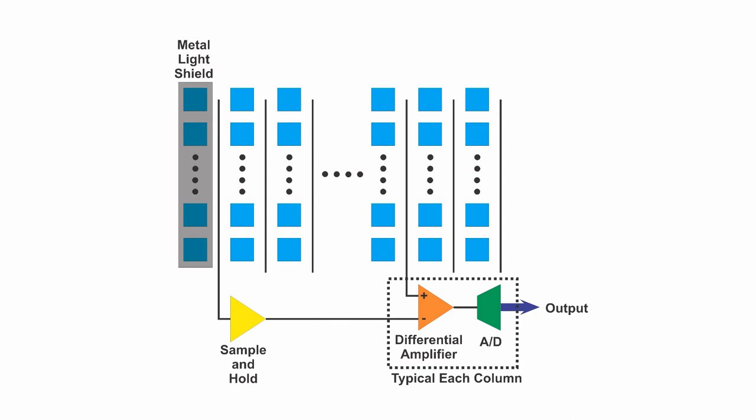Then a differential amplifier subtracts this dark current signal from the signals from the active pixels. This corrects for typical dark current. It does not correct for the variation in dark current from pixel to pixel, or the variation in dark current over time for a given pixel.